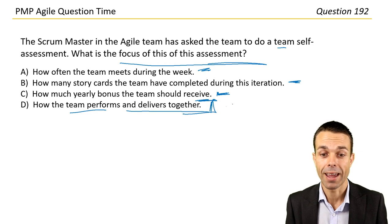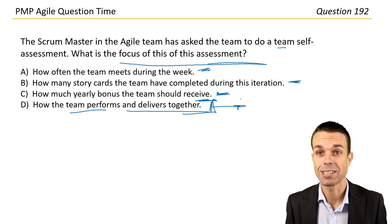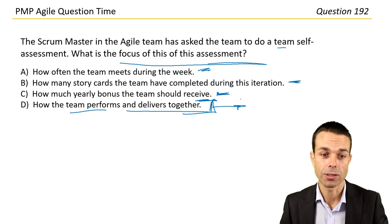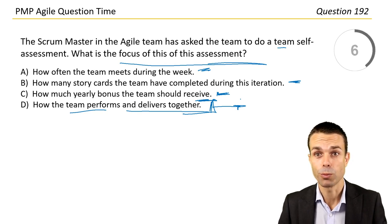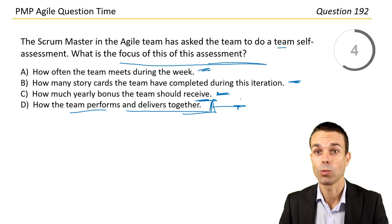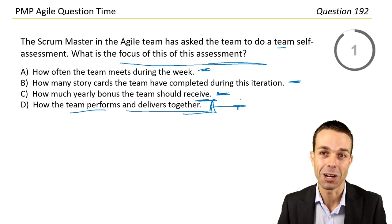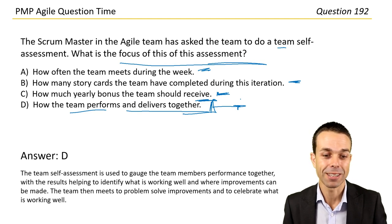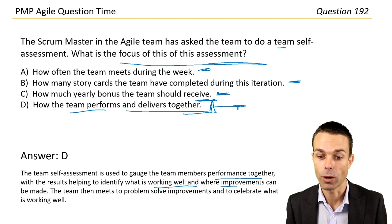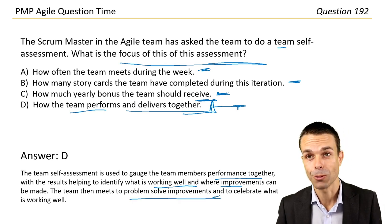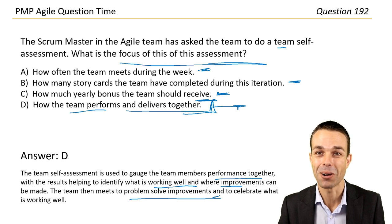Yes, how the team performs and delivers together is the one. It's a good way to check in with your team, asking questions around delivery and how we're working together, and assessing how individuals are feeling. It's a great practice and a good way of getting feedback, which is a key part of Agile. Answer D: The team self-assessment is used to gauge team members' performance, with results helping to identify what is working well and where improvements can be made. The team then meets to problem-solve improvements and celebrate what is working well.